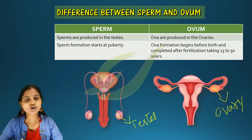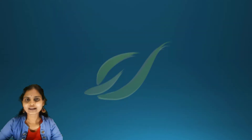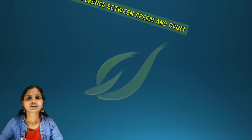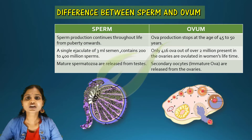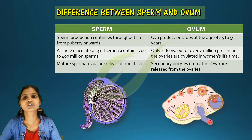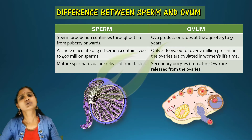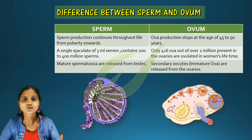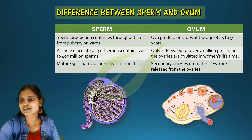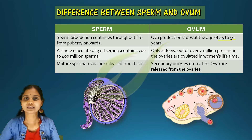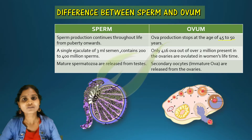The production of ovum stops at menopause. In contrast, sperm production continues throughout life from puberty in the case of males, whereas ovum production stops at the age of 45 to 50 years.